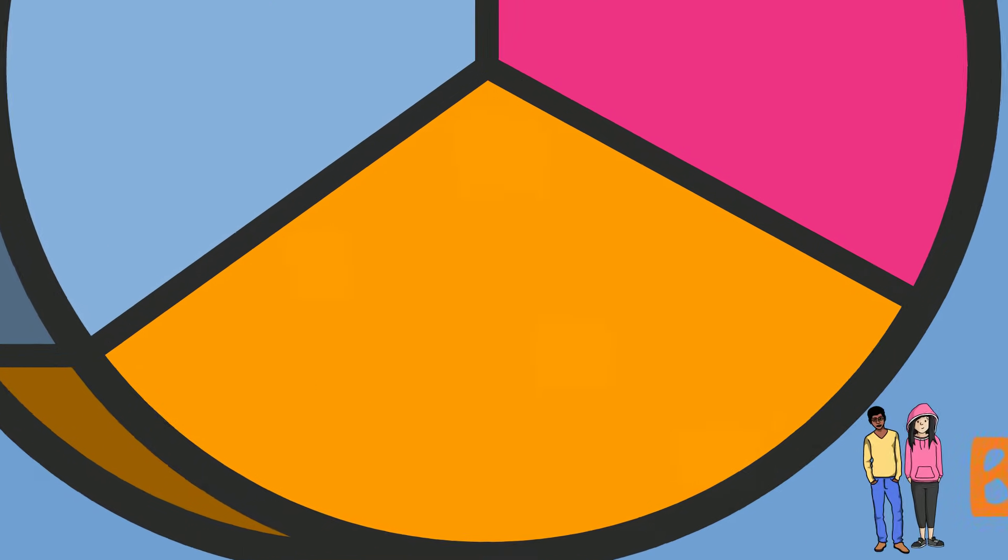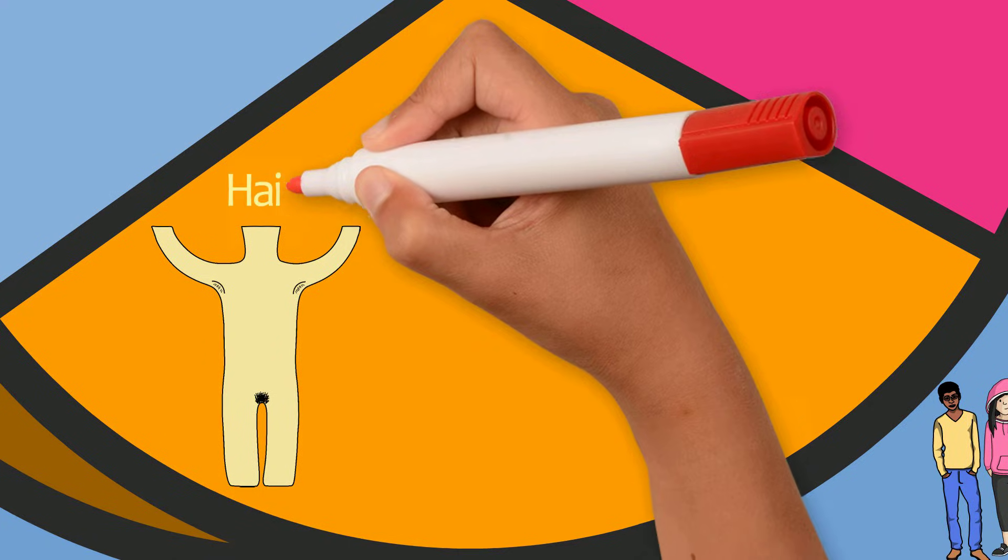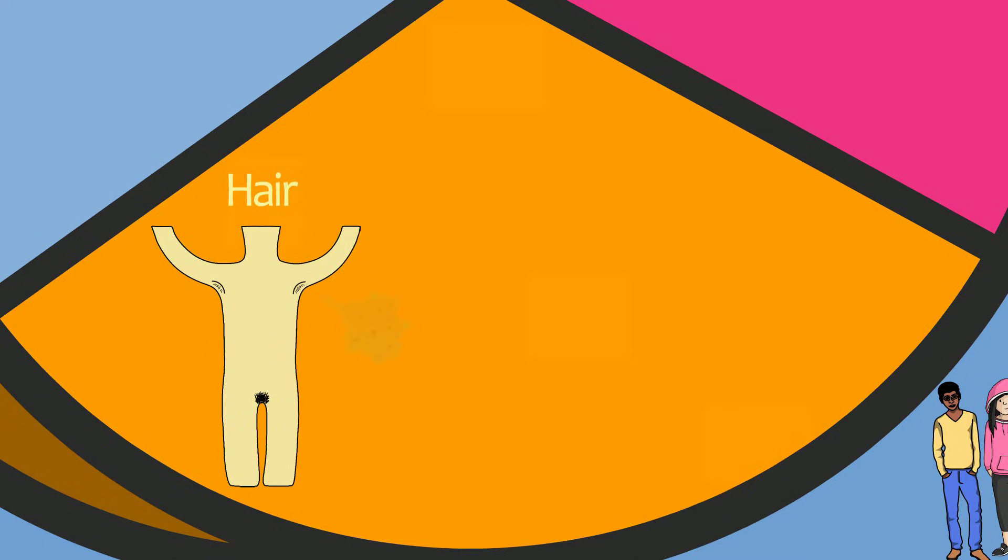In both boys and girls, thick hair begins to grow in the armpits and genital area. Body sweat and odor start to form, which deodorant can help control.